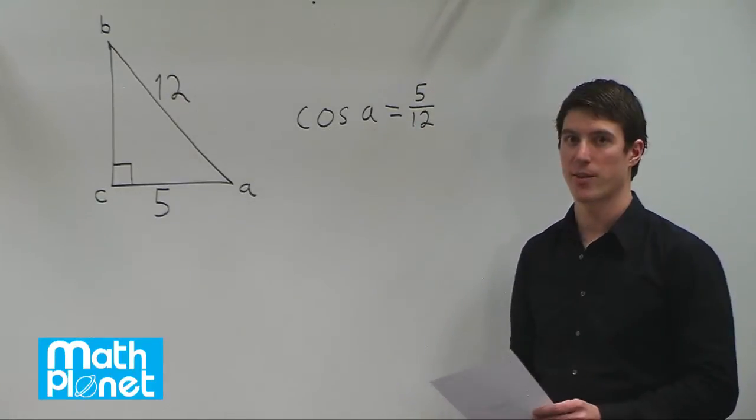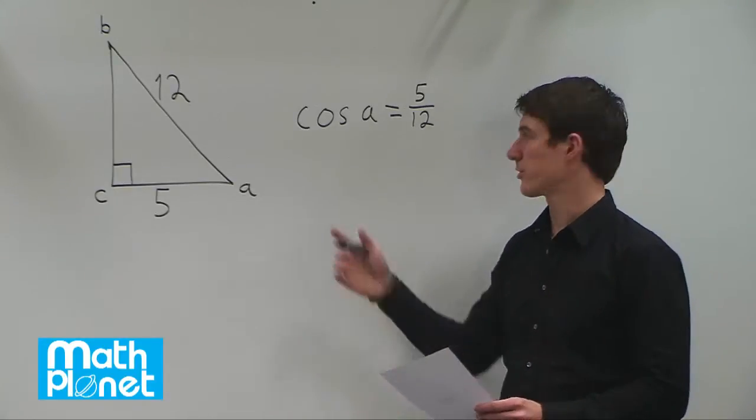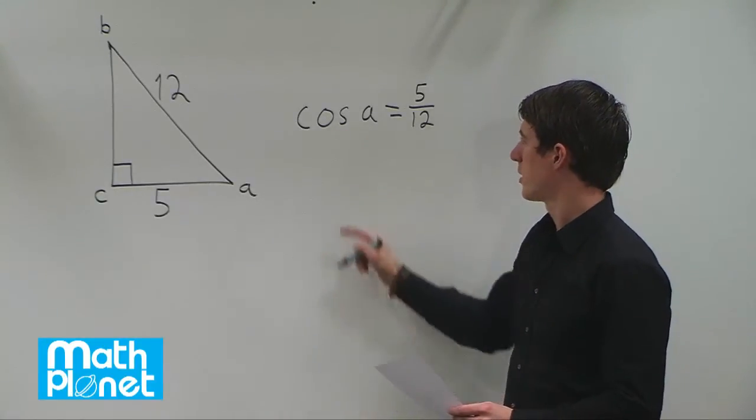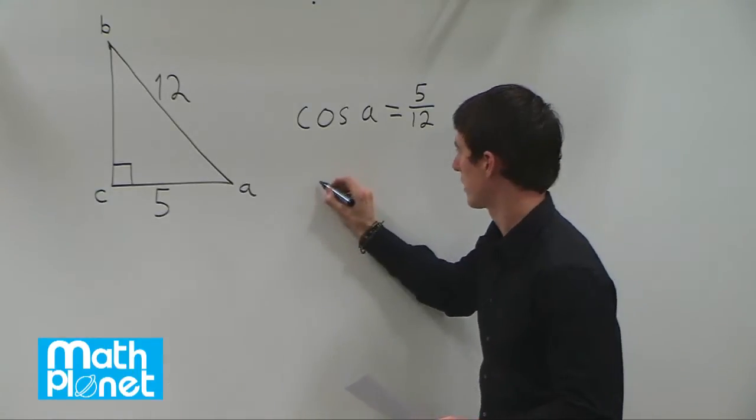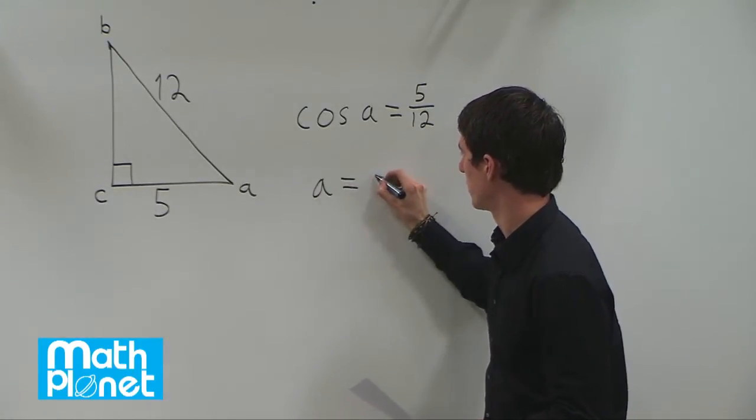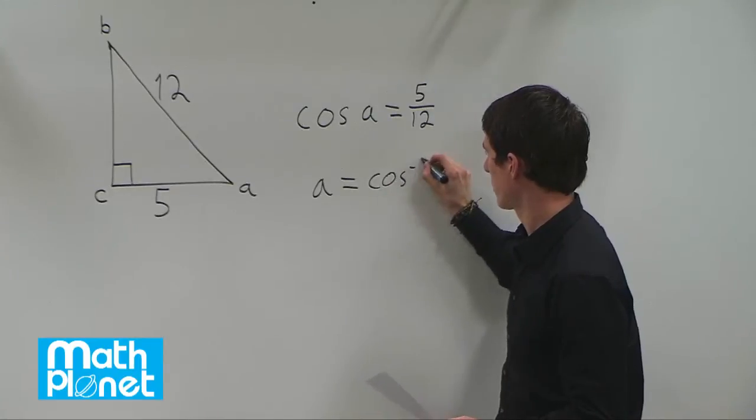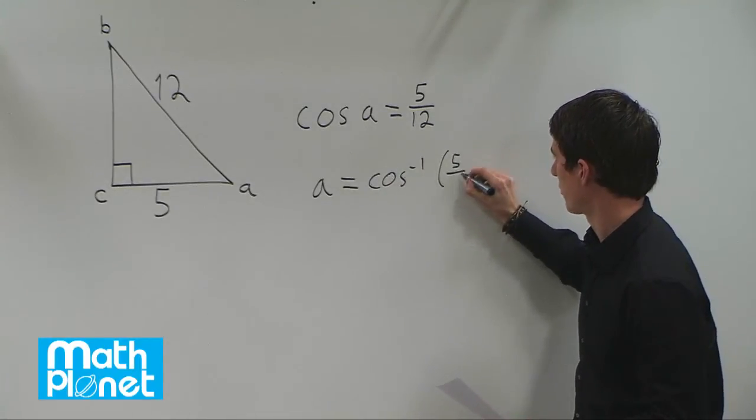To find A, we have to do the inverse cosine of both sides, or also known as the arc cosine. So the inverse cosine of both sides gives us A is equal to cos to the negative 1 times 5 twelfths.